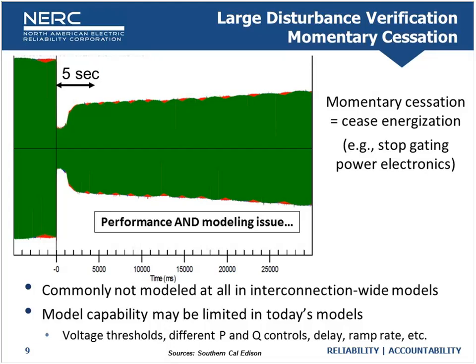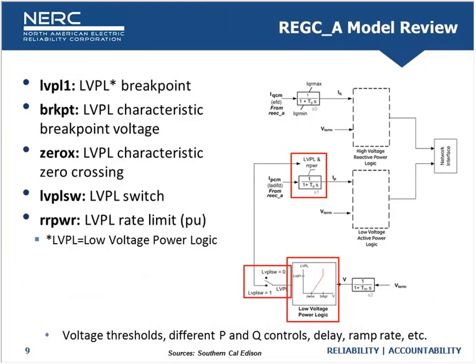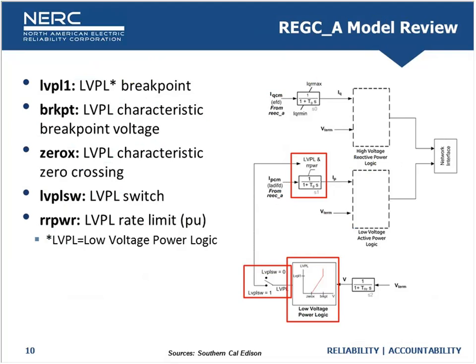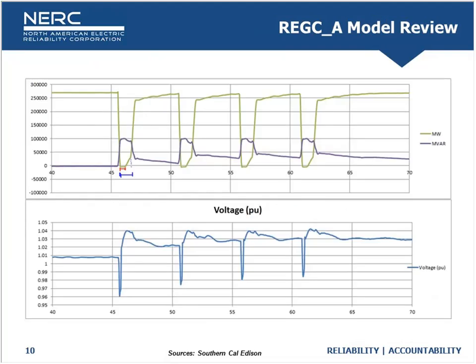We need to evolve in terms of standards, but also in terms of models and modeling practices. The tools need to have the capability, and the models need to be able to model momentary cessation fairly accurately. We're going to seek improvement on this in the next generation of models. The REGCA second-generation renewable model is what we're looking at for how to accurately model momentary cessation, and we'll have some guidance coming out to the industry on that shortly.